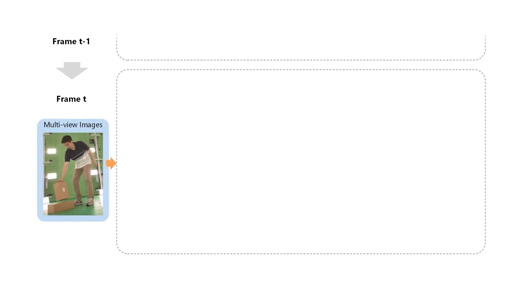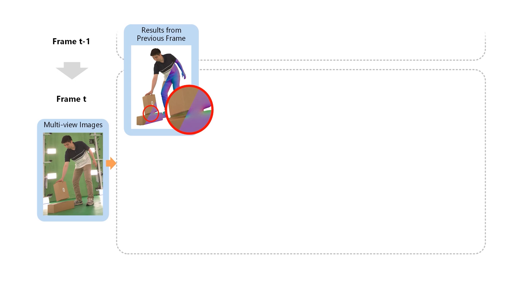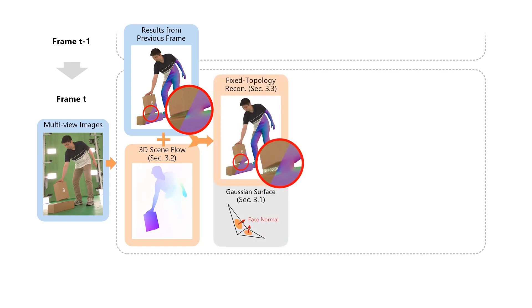Now let's look at how G-star achieves these capabilities. G-star processes each frame sequentially. For each frame, we take multi-view RGBD images and the Gaussian surfaces from the previous frame as input. We warp the Gaussian surfaces using 3D scene flow, which provides robust initialization for large motions. Next, we optimize the Gaussian surfaces using the multi-view input for the current frame, assuming surface topology does not change.